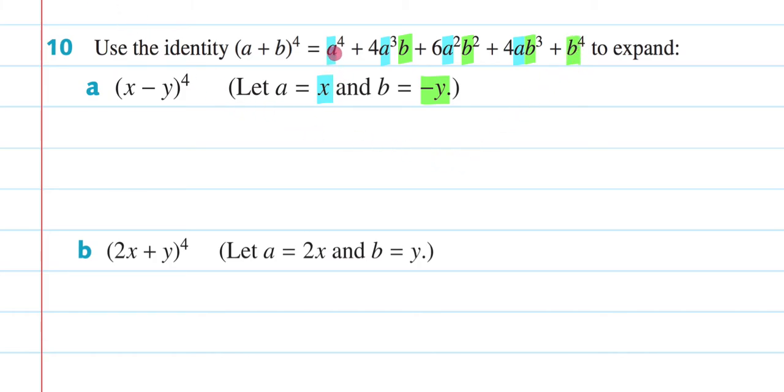So I have a to the 4, so that's going to be x to the 4. Then I have plus 4, a cubed, that will be x cubed. Then I have b, now b is negative y, so it's going to be y, and this whole thing is going to be a negative. Then I continue, plus 6, a squared will be x squared. Then it's going to be b squared. Now when you square a negative number, it becomes positive. So I don't have to change the sign there, it remains positive.